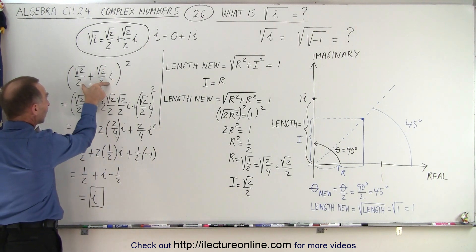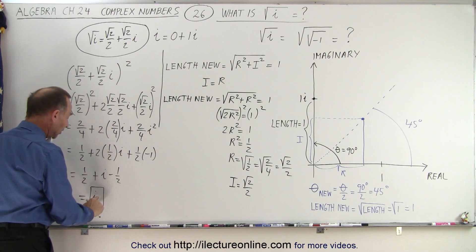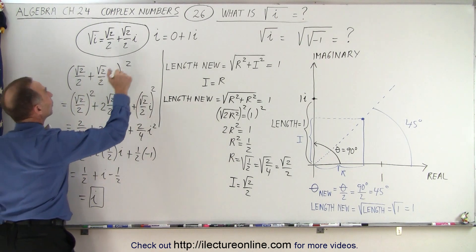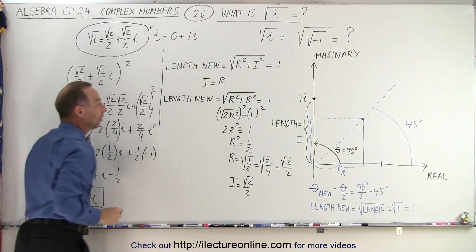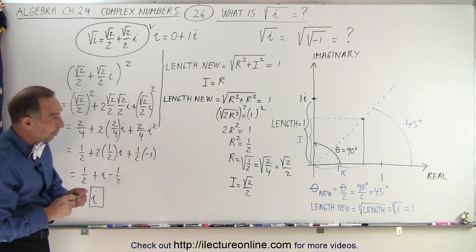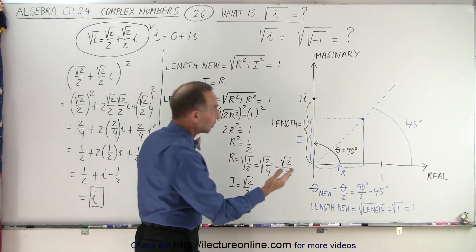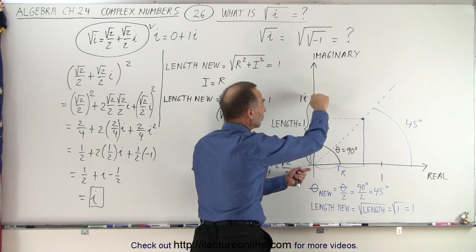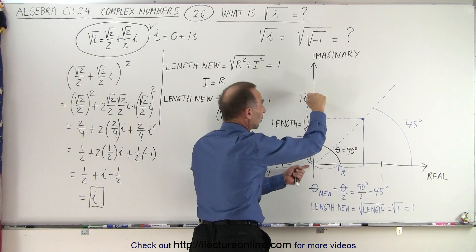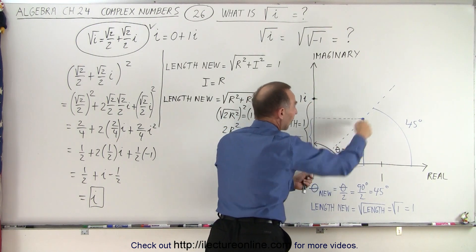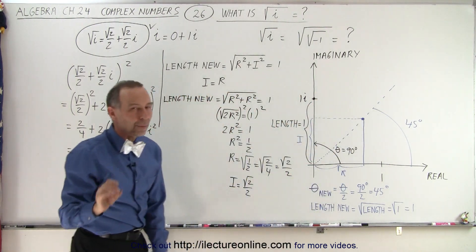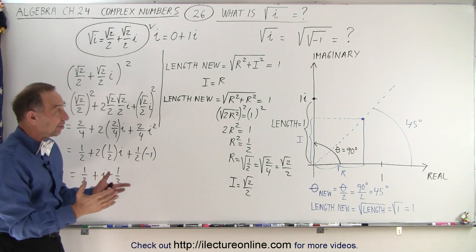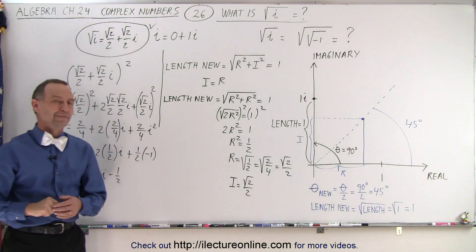So therefore if we square this and we get i, that means the square root of this must equal that, which means that this is correct. Notice that graphical method: when we take the square root of a complex number, we take half the angle and then take the square root of the magnitude to find the point on that new line — that's how we can find the square root of a complex number, in this case the square root of i.